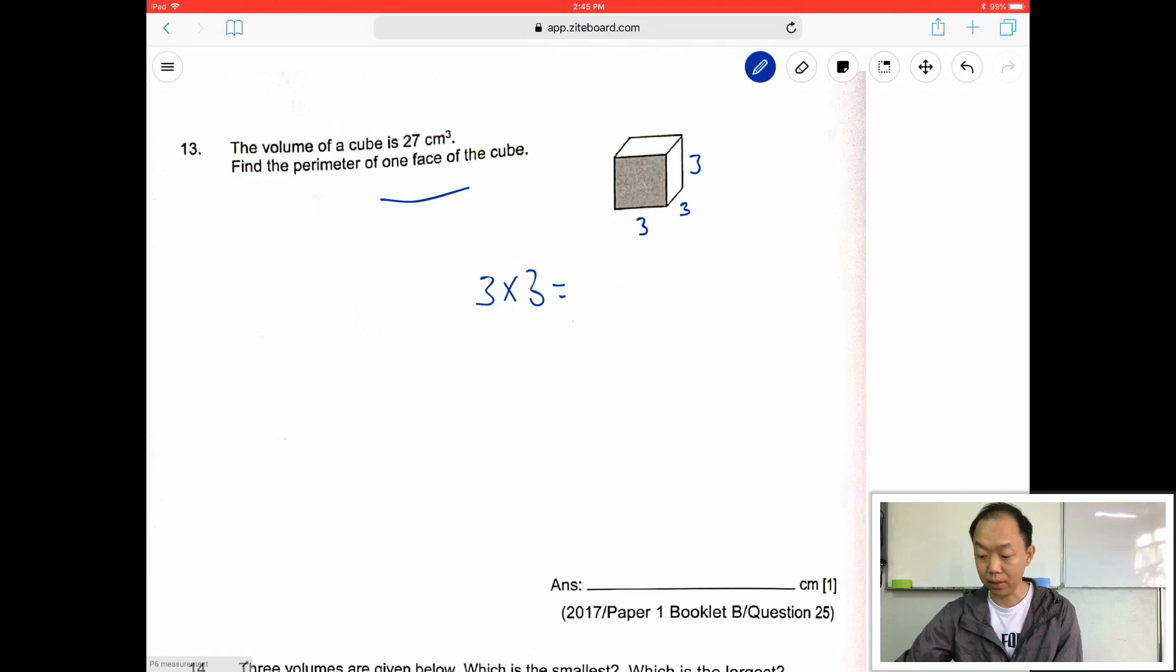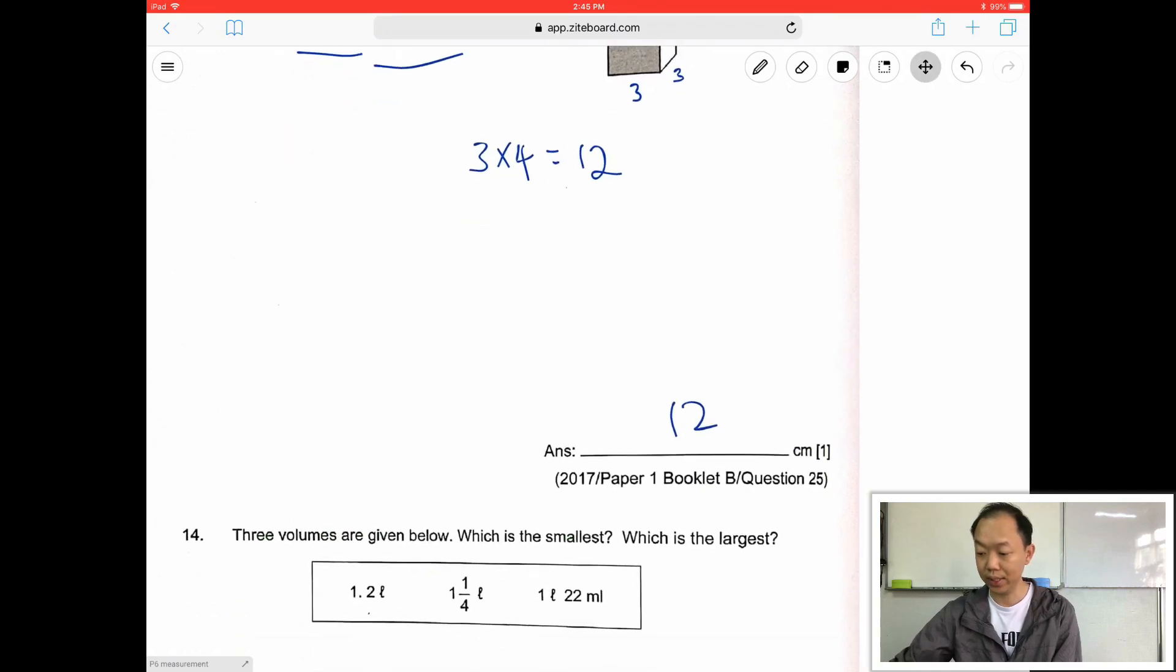So answer is... Error. Sorry. They're asking for the perimeter. So perimeter is 3 times 4. So 3 times 4 equals to 12. Next.